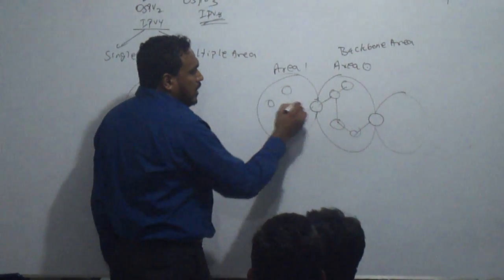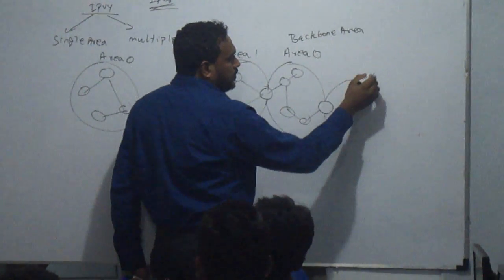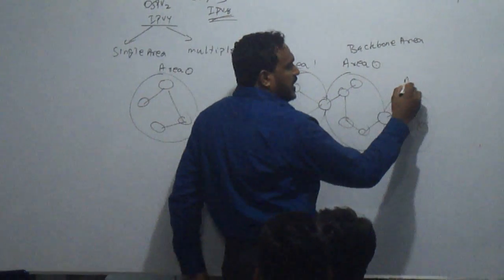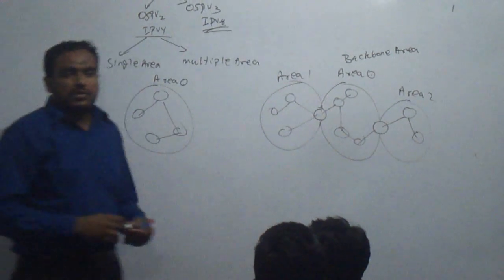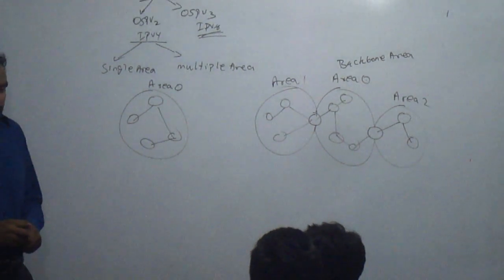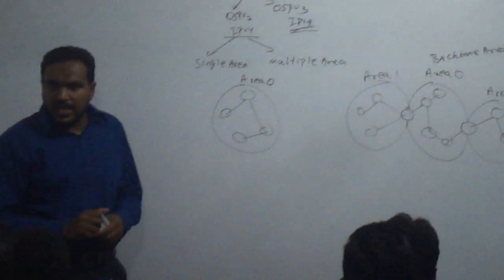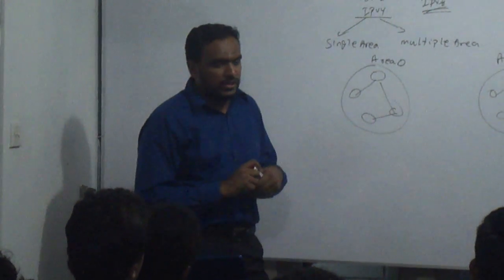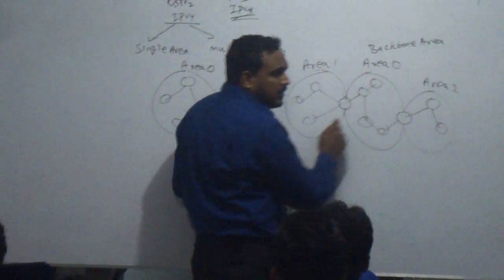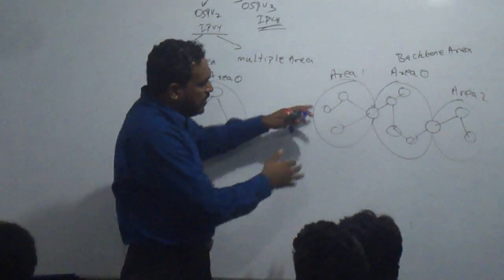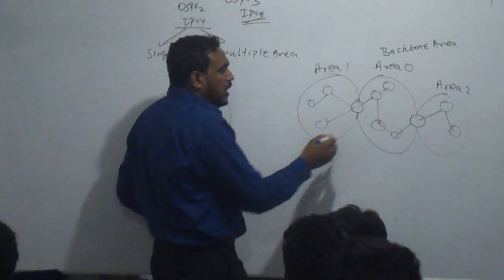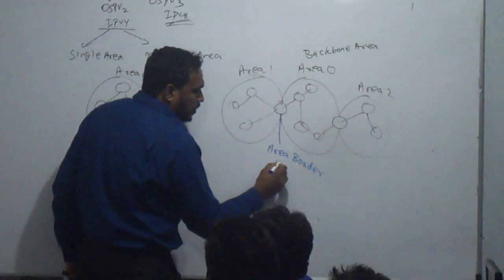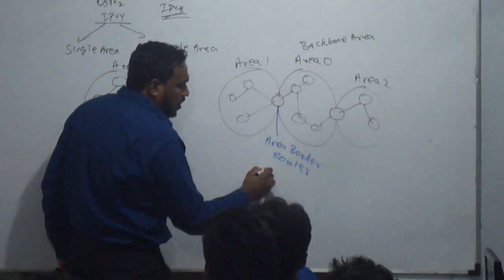For example, area 1 is connected to area 0, and area 2 is also connected to area 0. In multiple area OSPF, area 0 is a must and is called the backbone area. The other areas must connect to area 0. The routers that connect these areas are called area border routers, or ABR.